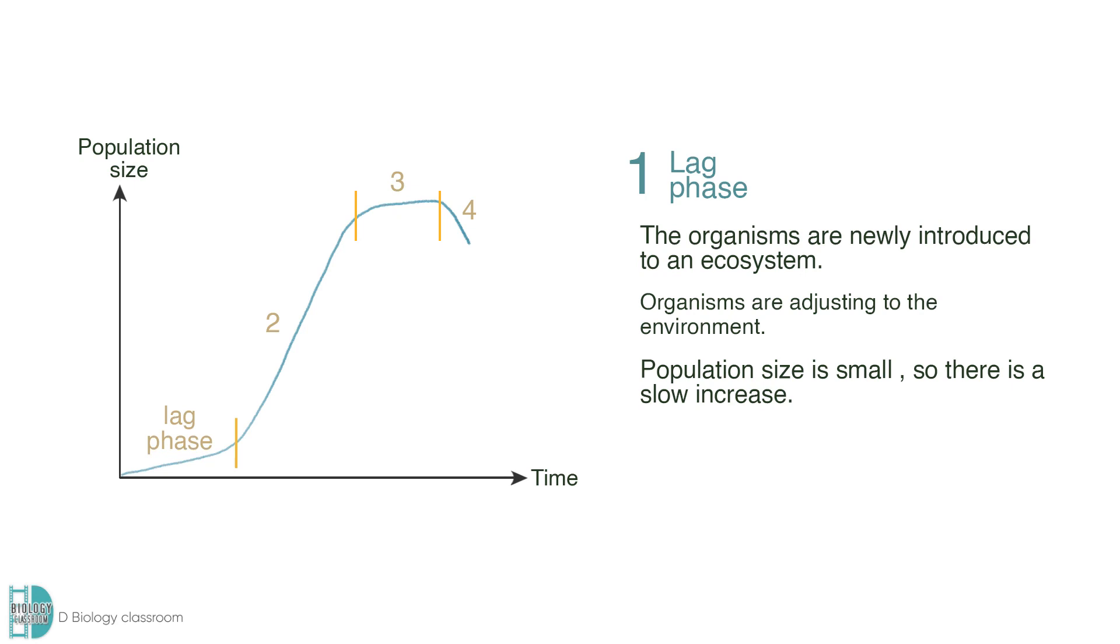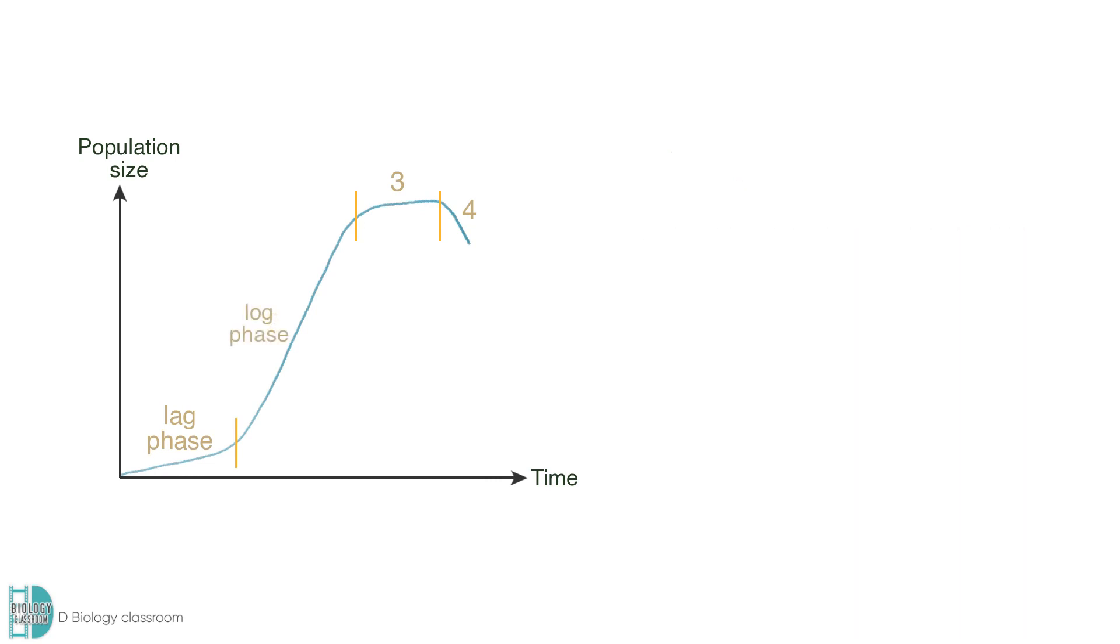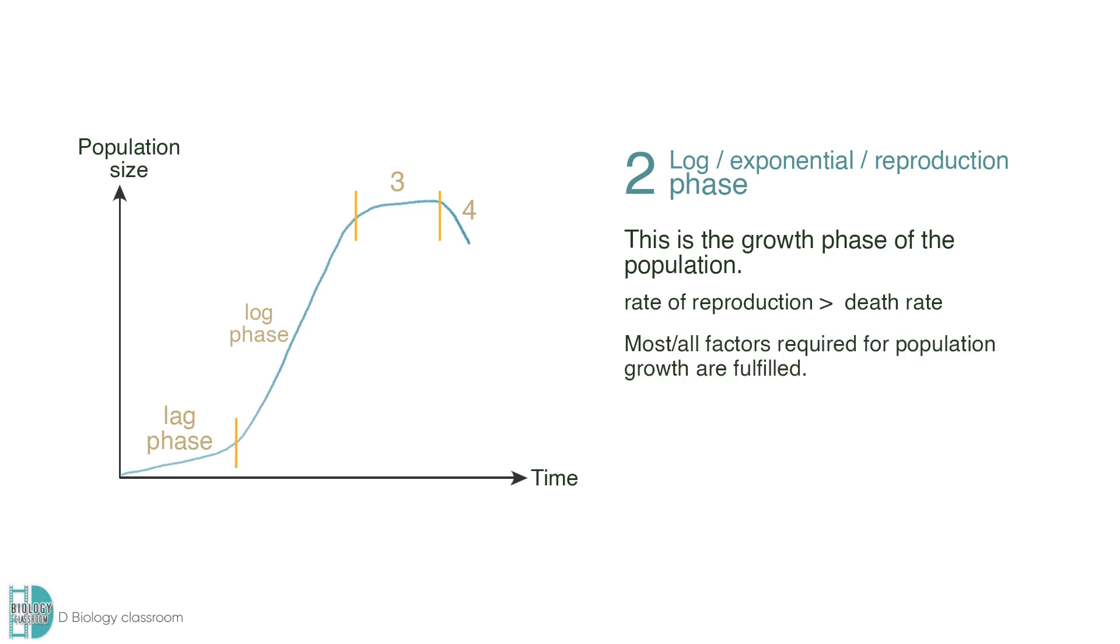If they can adapt well to the environment, a log, exponential, or reproduction phase can be observed. There is a steep increase or exponential increase. Hence, it is also considered the growth phase of the population. At this moment, the rate of reproduction is greater than the death rate. Most or all the factors required for population growth are fulfilled. If it continues, the organisms start to become overpopulated.